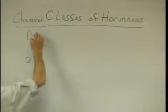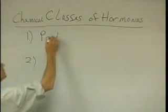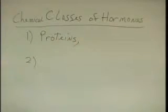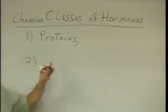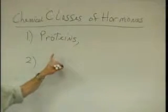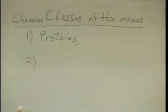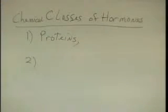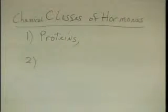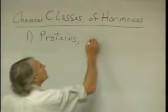The two different possible classes are protein hormones. Proteins are fairly large — they're made of amino acids, of course. A typical protein hormone might be as many as 50 amino acids or a little longer. But we also have smaller proteins, and if they're small enough, we tend to call them peptides.